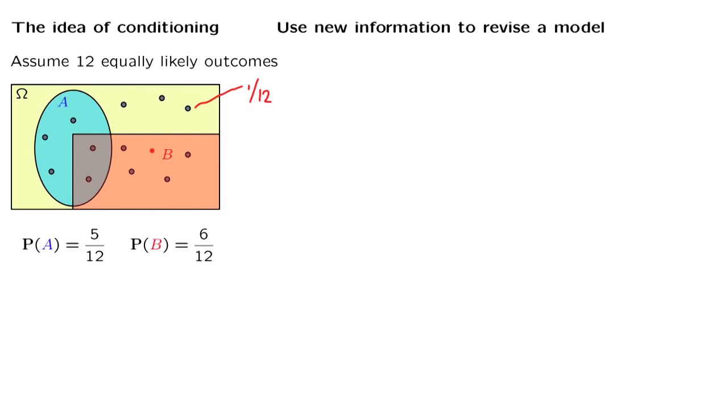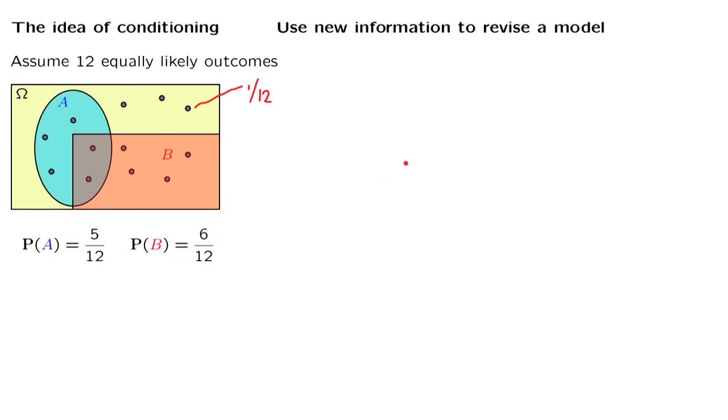Event A has five elements, so its probability is 5 over 12. And event B has six elements, so it has probability 6 over 12. Suppose now that someone tells you that event B has occurred, but tells you nothing more about the outcome. How should the model change?